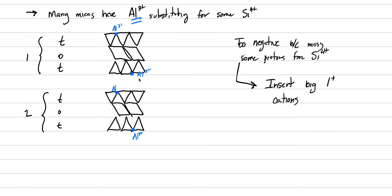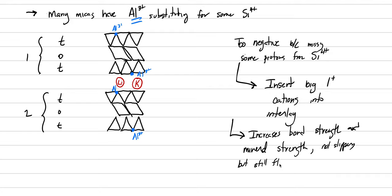And so what ends up happening is to make that charge compensation work out, in between the two layers, we insert some big one plus cations. So we're going to insert big one plus cations into this inter layer. Potassium could be something that fits in here, or you could get lithium. Insert big one cations into the inter layer. And it is those big cations that strengthen the minerals, not by too much, but they do strengthen the mineral. So it increases bond strength and mineral strength. The material will still flake apart and break with a perfect cleavage, but it no longer is so weak that it feels slippery. So it's not slippery, but still flexible flakes.